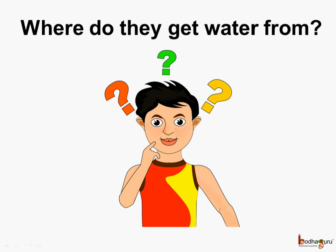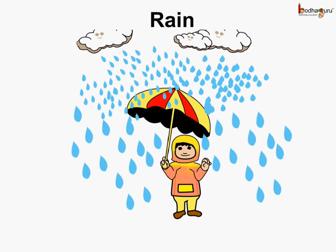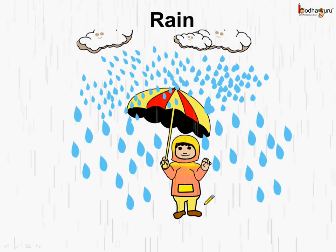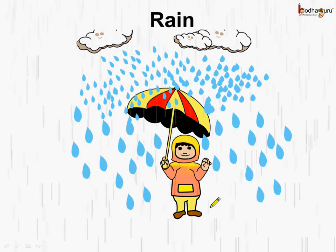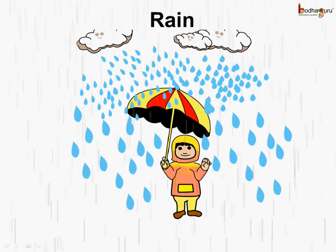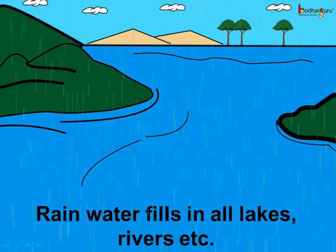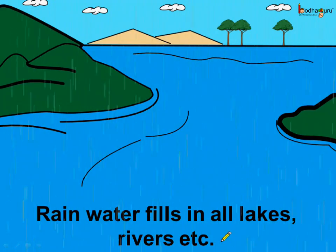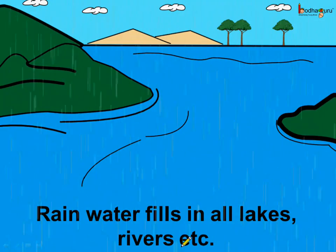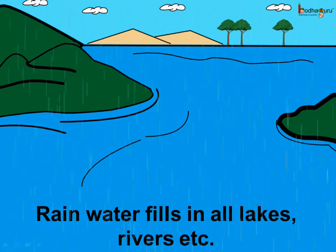But the question is where do they get water from? Well, it is rain. The rain gives water to all of us. It's the rain water which fills in all the lakes, rivers, oceans etc.